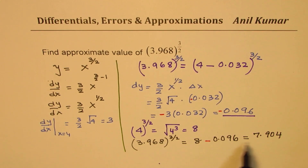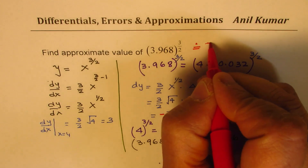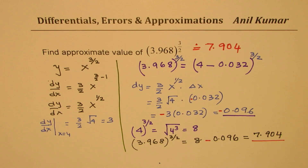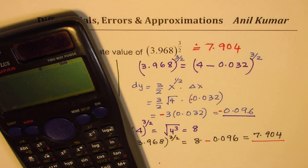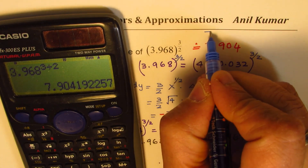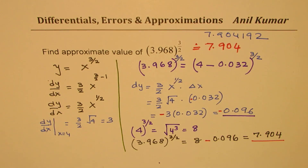7.904 — so this value is approximately equal to slightly less than 8: 7.904. Now let's check this value with a calculator. 3.968 to the power of 3 divided by 2 — if you check your result, you actually get 7.904192. So if you compare up to 3 decimal places, we got an accurate answer. So this method is that simple.